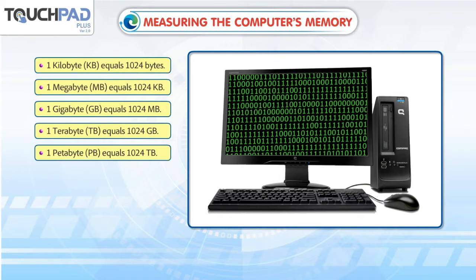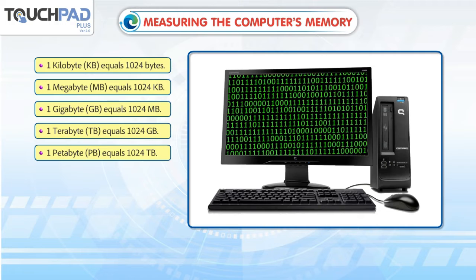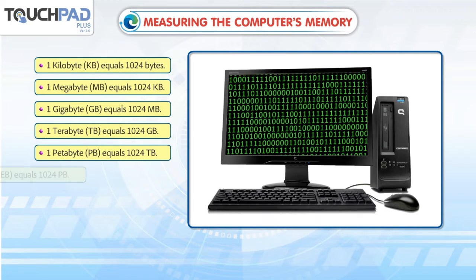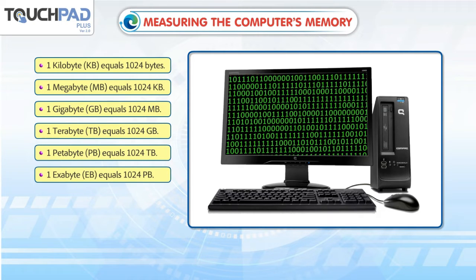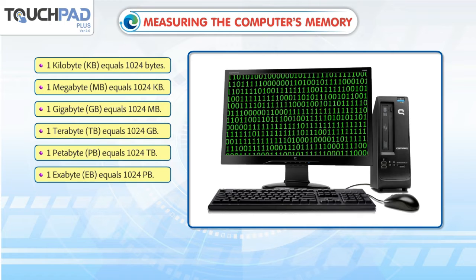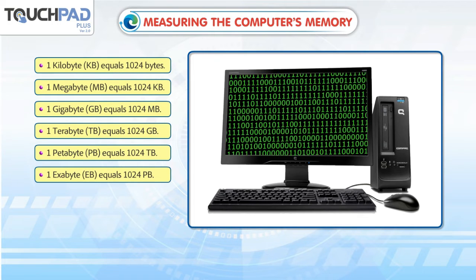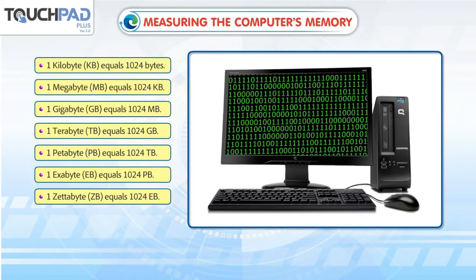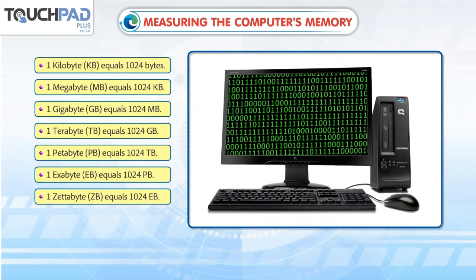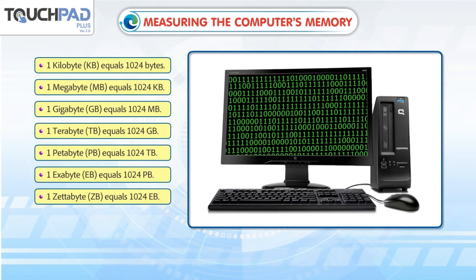1 petabyte (PB) equals 1024 TB. 1 exabyte (EB) equals 1024 PB. 1 zettabyte (ZB) equals 1024 EB.